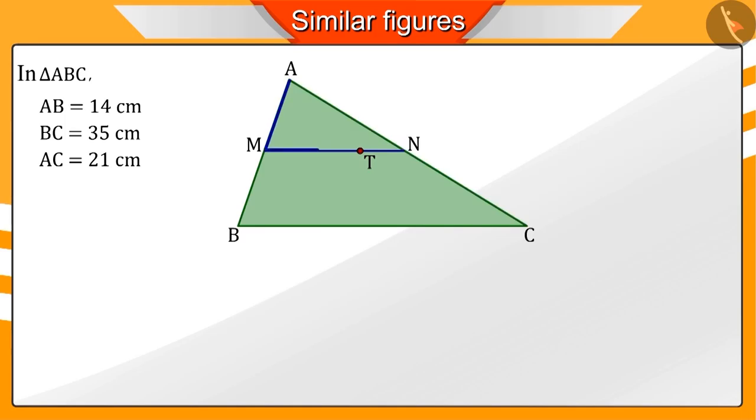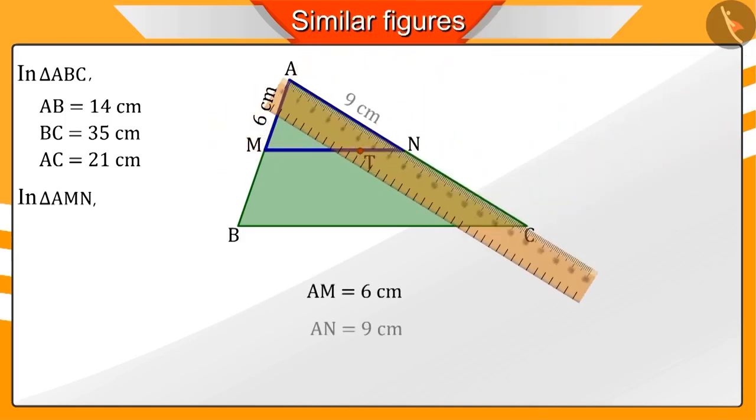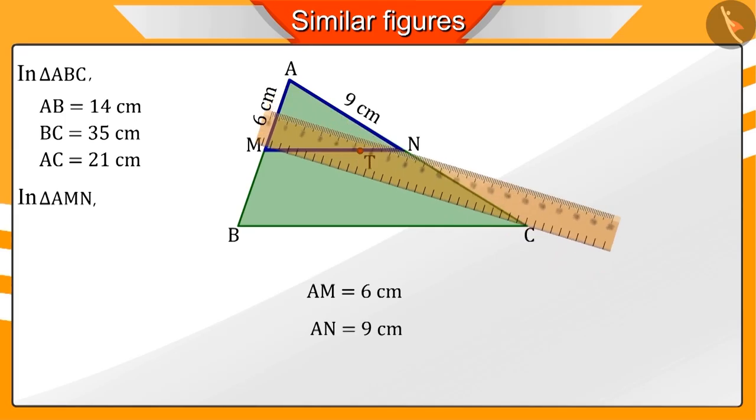As you can see, here we get a new triangle AMN. If we measure the sides of triangle AMN, AM measures 6 cm, AN measures 9 cm, and MN measures 15 cm.